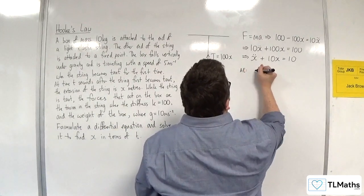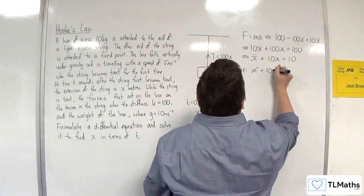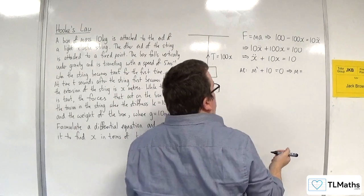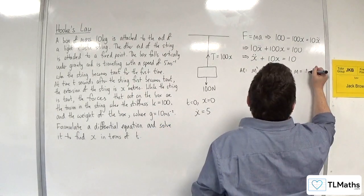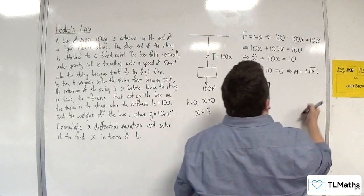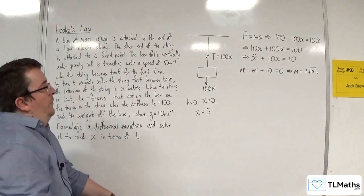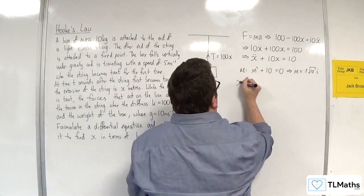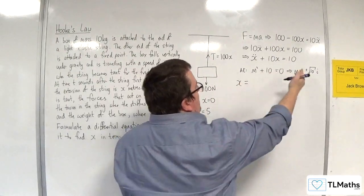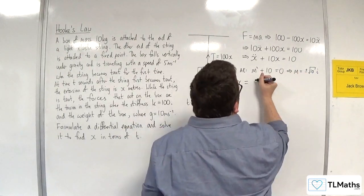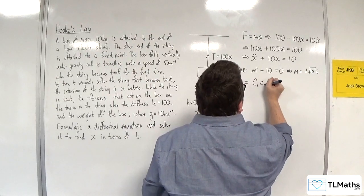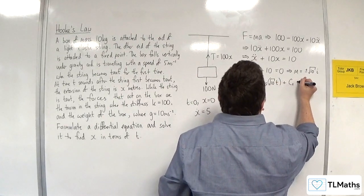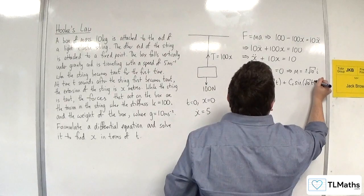So I'm going to use the auxiliary equation, which would be m squared plus 10 is equal to 0. So m is going to be equal to plus or minus root 10i. So that means that the complementary function is x equals, because there's no real part, it's just going to be c1 cosine of root 10 times t plus c2 sine of root 10 times t.